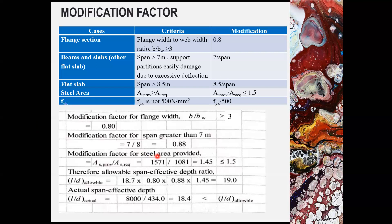You need to compare with the actual span over effective debt ratio, l over d actual, which is equal to the span at 1000 divided the effective debt, 434. So you obtain here the actual l over d is 18.4, which is less than the allowable l over d. So this is satisfied.